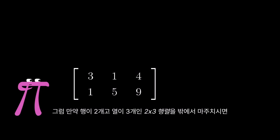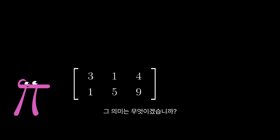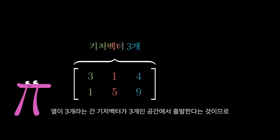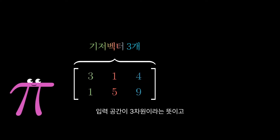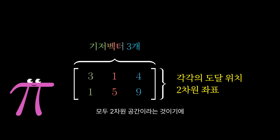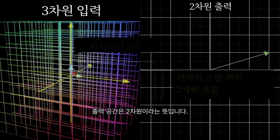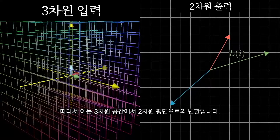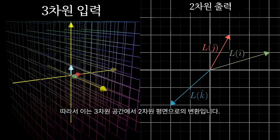Likewise, if you see a 2 by 3 matrix with two rows and three columns, what do you think that means? Well, the three columns indicate that you're starting in a space that has three basis vectors, so we're starting in three dimensions. And the two rows indicate that the landing spot for each of those three basis vectors is described with only two coordinates, so they must be landing in two dimensions. So it's a transformation from 3D space onto the 2D plane.